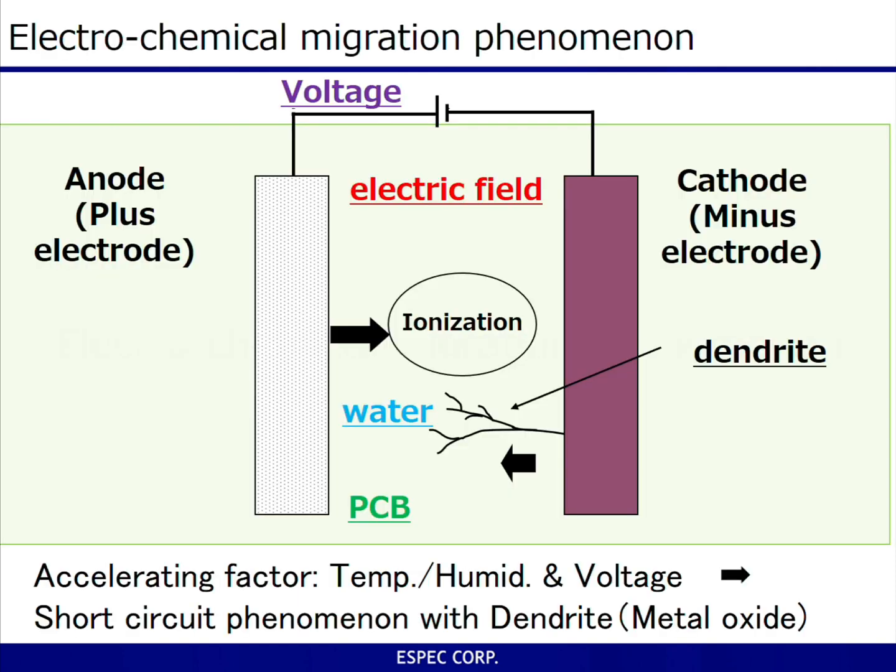Electrochemical migration is a process in which ions are generated by temperature, humidity, and a voltage difference between the anode and cathode, which are normally insulated. A metal oxide called dendrite grows over time, hence causing a short circuit between the electrodes.